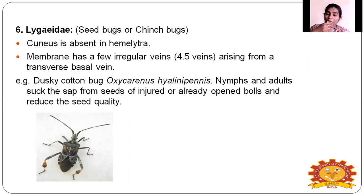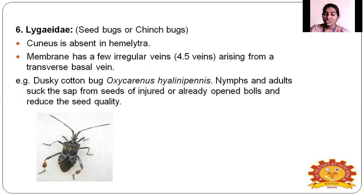Lygaeidae — the seed bug or chinch bug. The cuneus is absent in the hemi-elytra. The membrane is membranous with few irregular veins — approximately four to five veins arising from the transverse basal vein. Example: dusky cotton bug. These bugs are commonly seen on cotton; both nymph and adult suck sap from the seeds or already-opened bolls, thereby reducing the seed quality of the cotton plant.